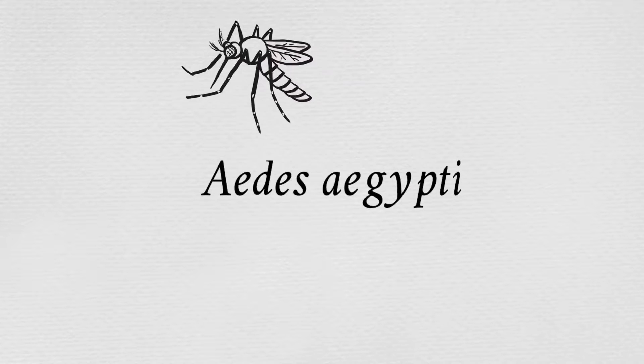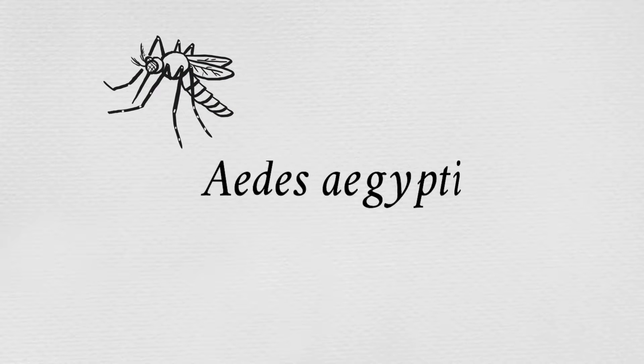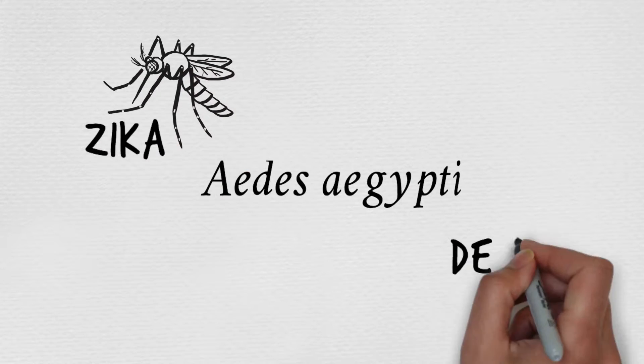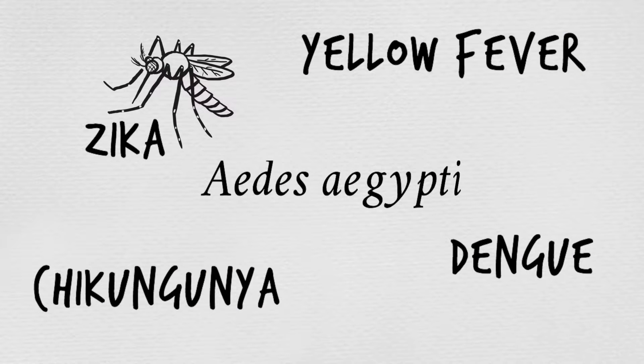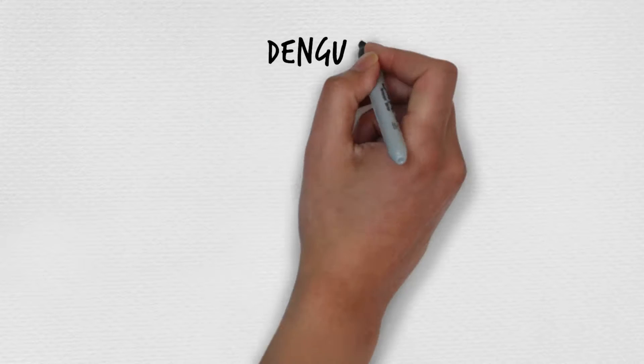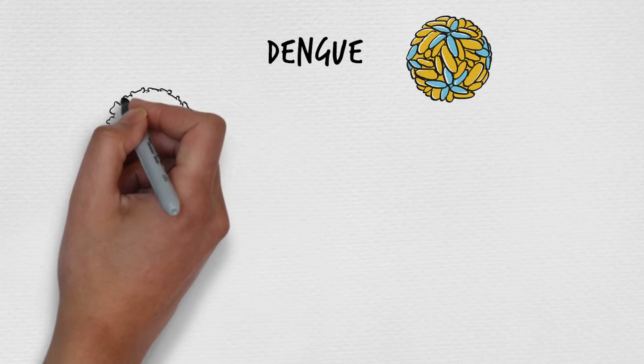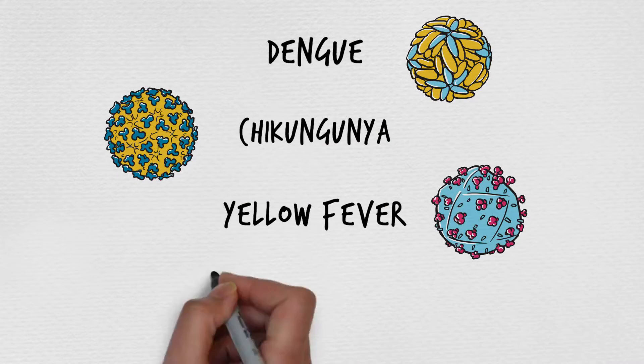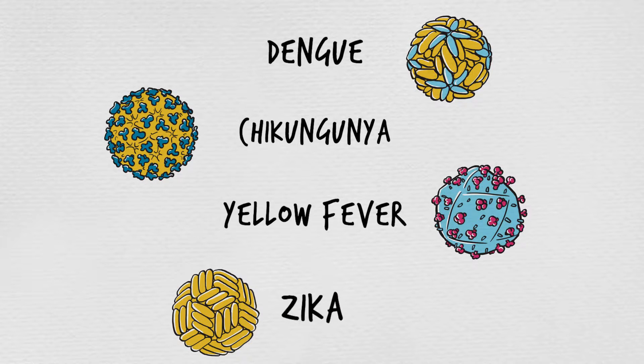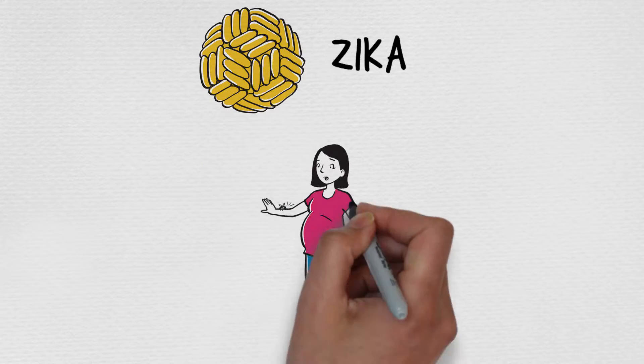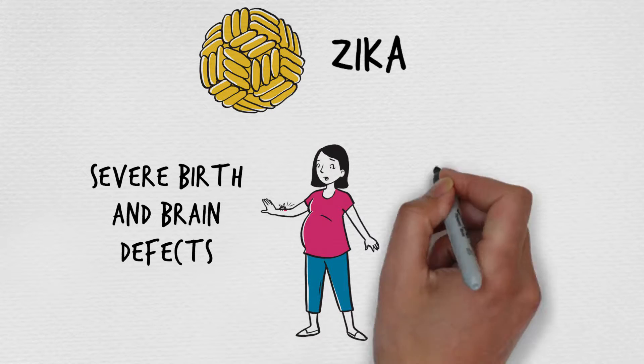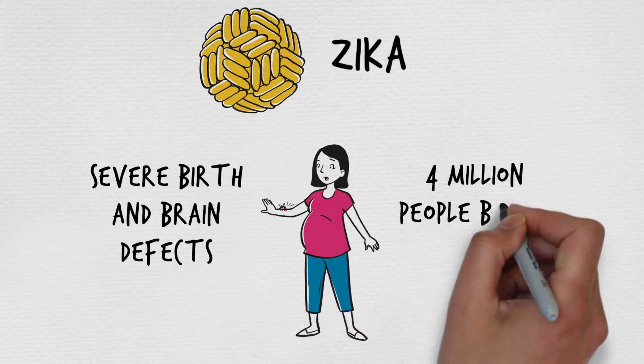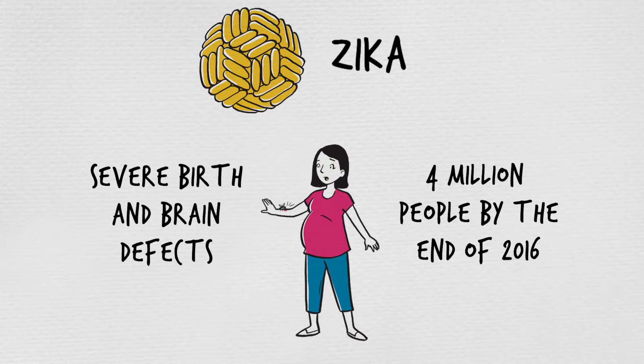The Aedes aegypti is a particularly dangerous mosquito which carries and transmits several of the world's most devastating mosquito-borne viruses to millions of people every year. These viruses lead to serious diseases, causing harm to humans and driving significant costs to nations. The Zika virus alone has been causing severe birth and brain defects across South and Central America and will infect as many as 4 million people by the end of 2016.